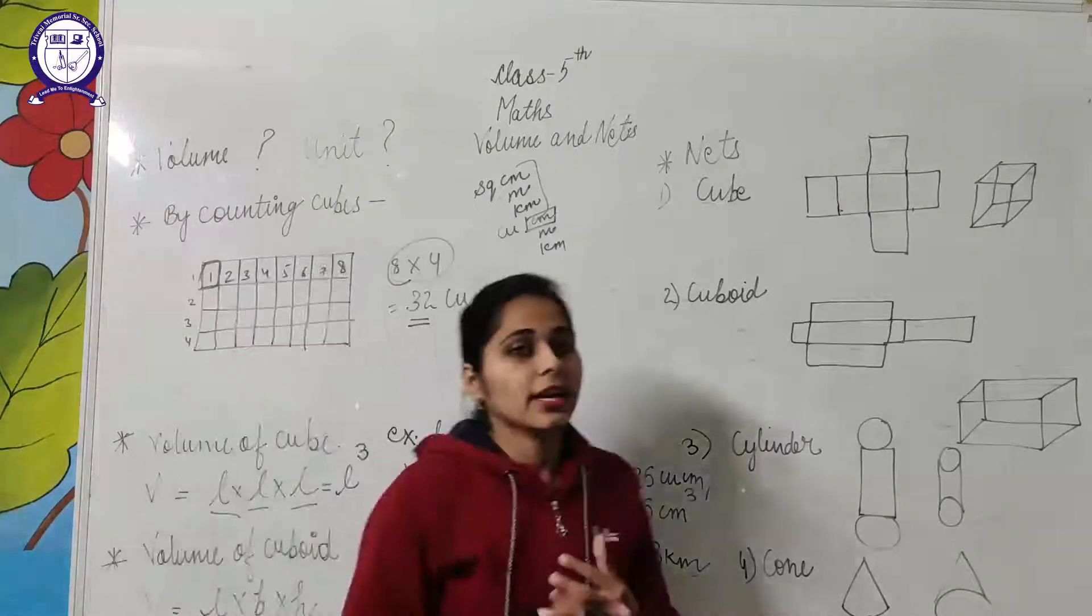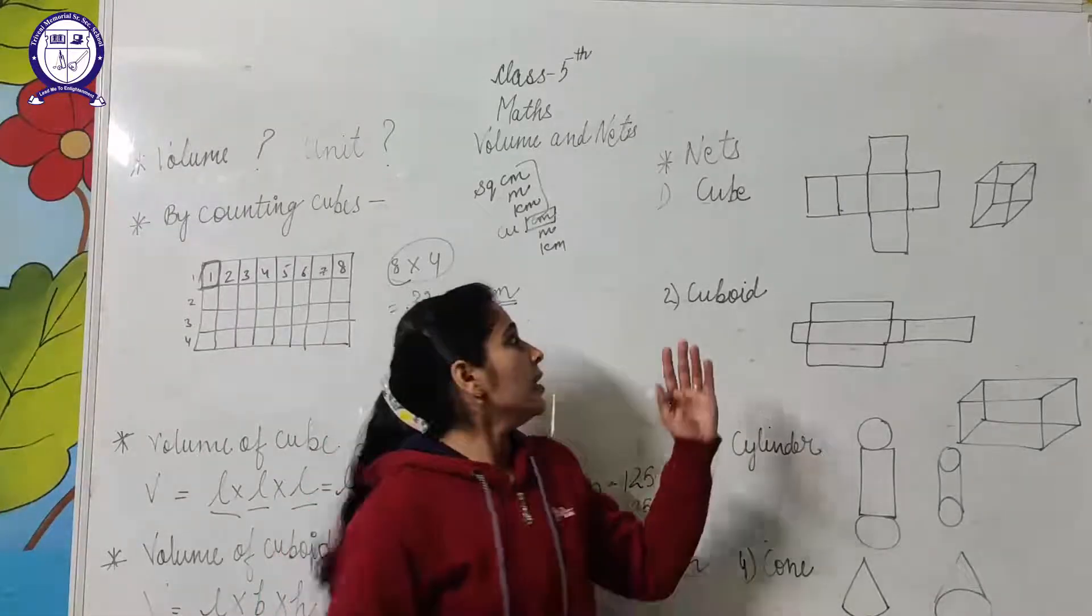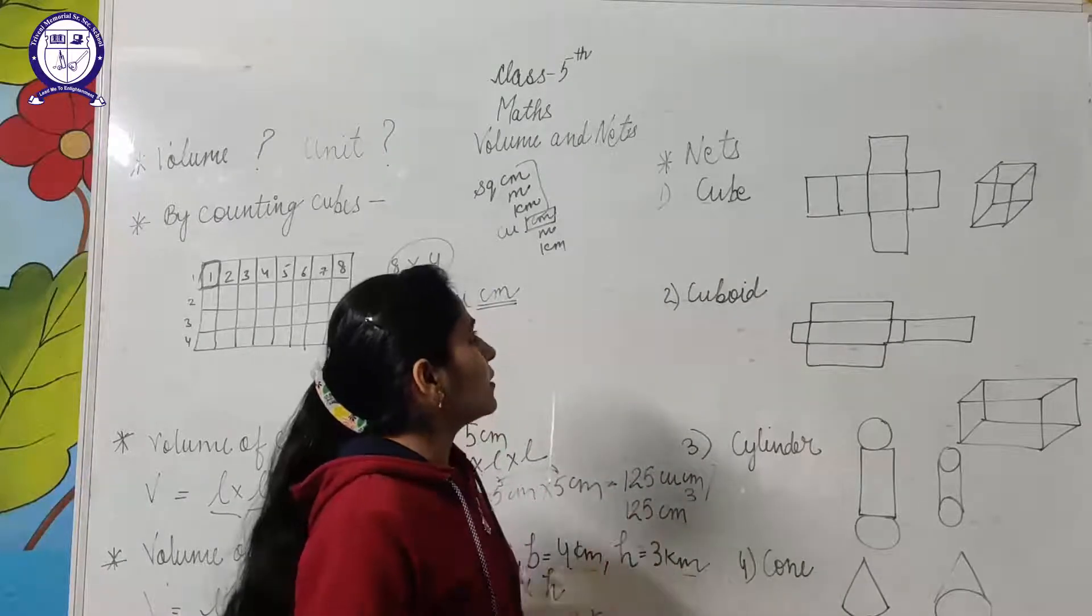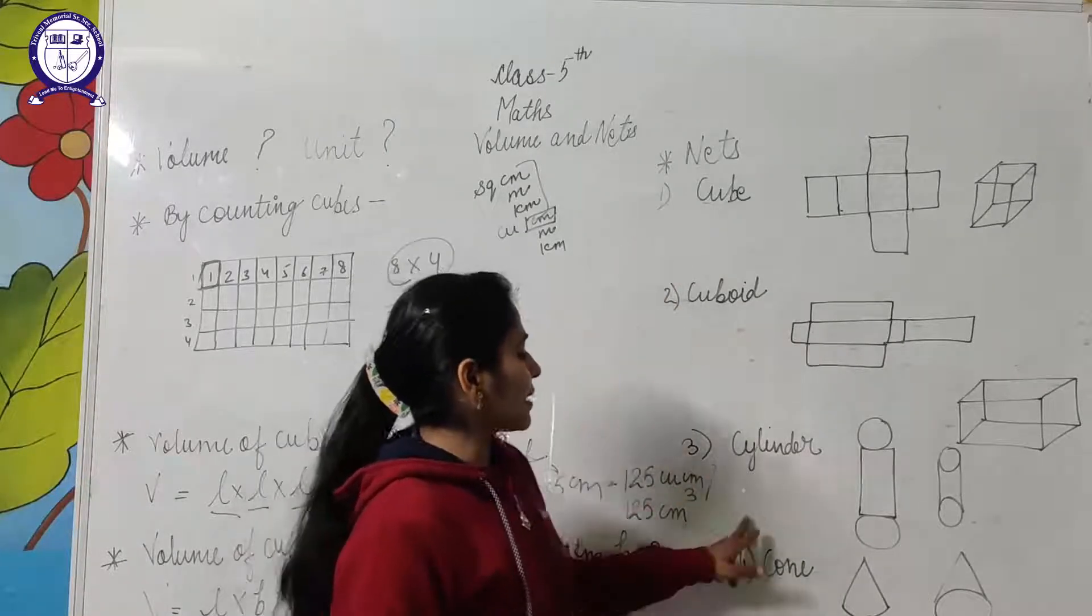Now, what is a net? Net is the opening of any 3D figure. Here are four figures given to you: cube, cuboid, cylinder, and cone.